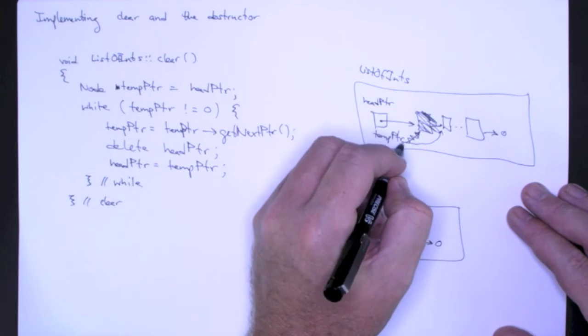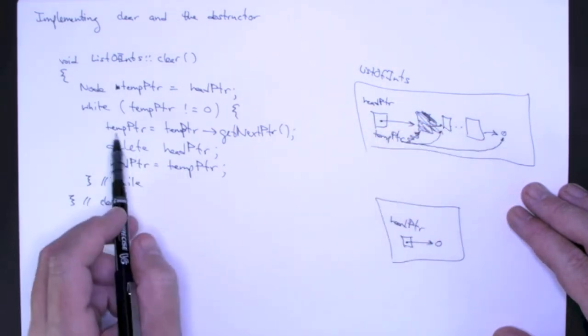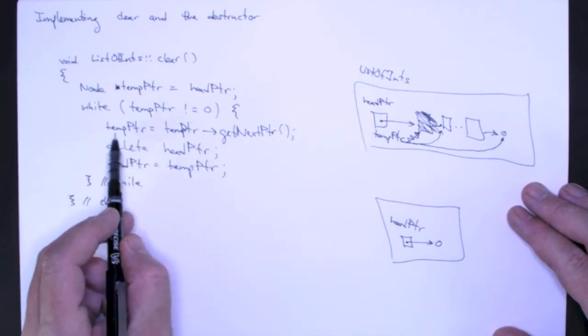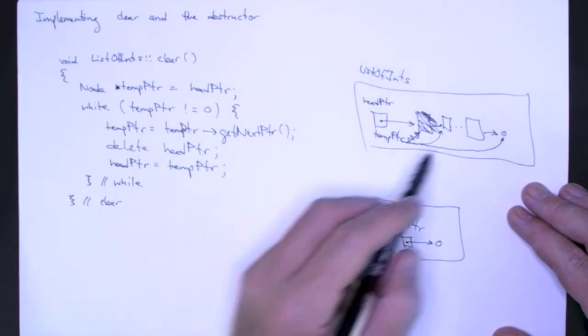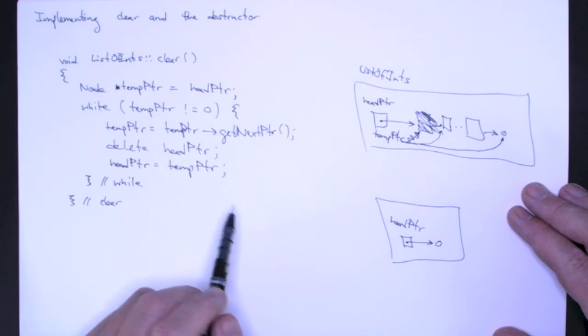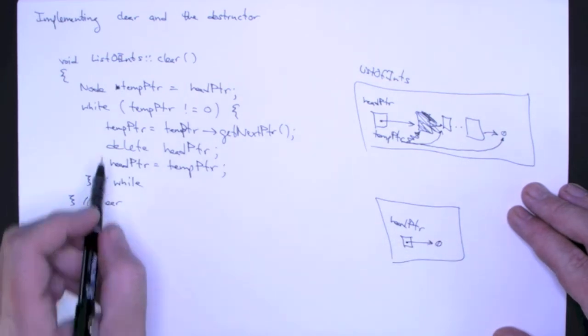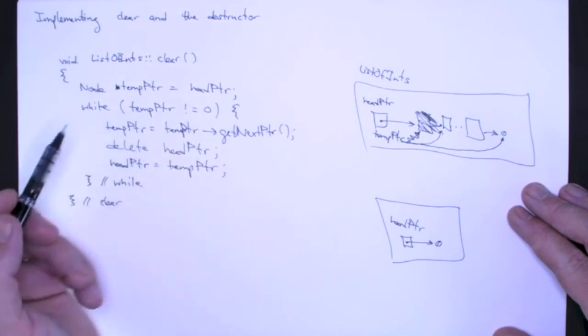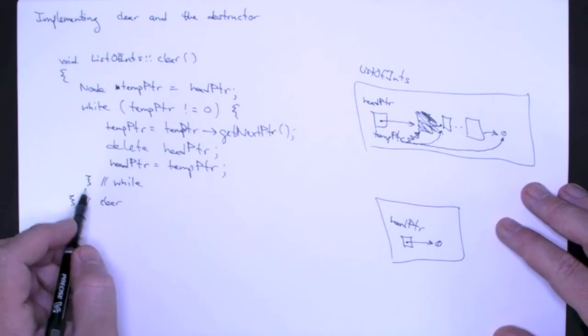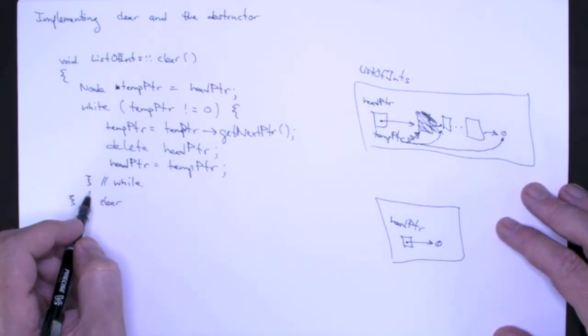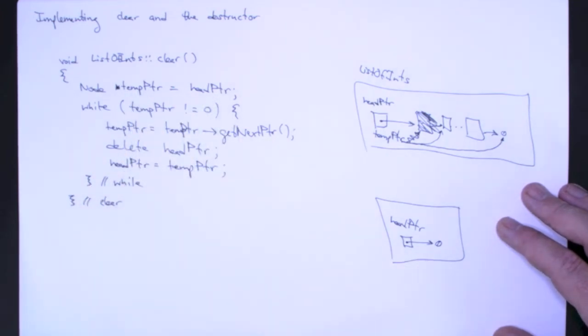What is going to happen upon termination is head pointer will point to null. That happens right here in this assignment. This is where temp pointer becomes null. Then I'll delete head pointer which is the last node in the list. Then I assign temp pointer to head pointer which makes head pointer point to null. Then when the while loop terminates, the while loop terminates because temp pointer points to null. So one of the post conditions of this loop is that when it terminates both temp pointer and head pointer will point to null. Now when clear terminates temp pointer will be deallocated because it's local but head pointer will persist because it's a class private data member and it points to null. This is exactly what we want to have happen when clear terminates.